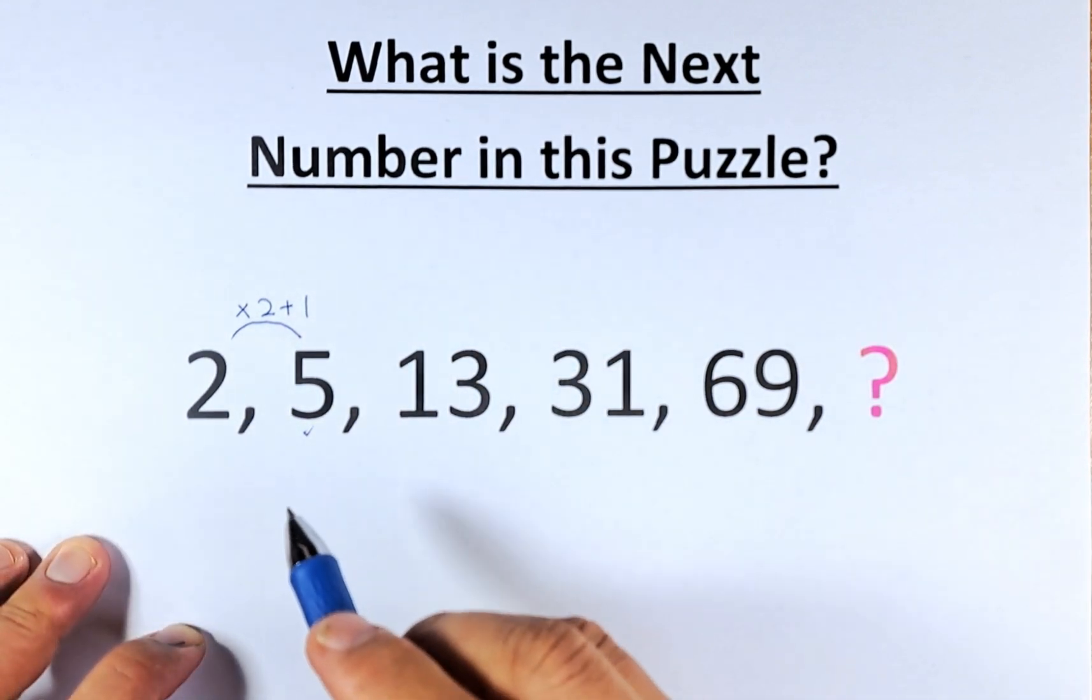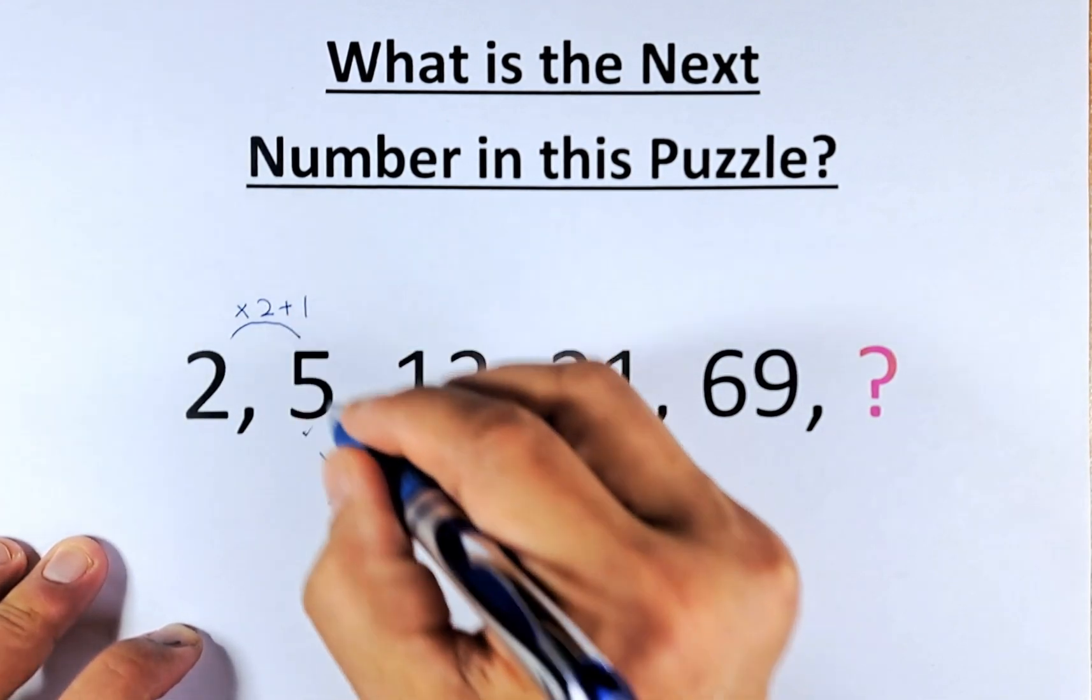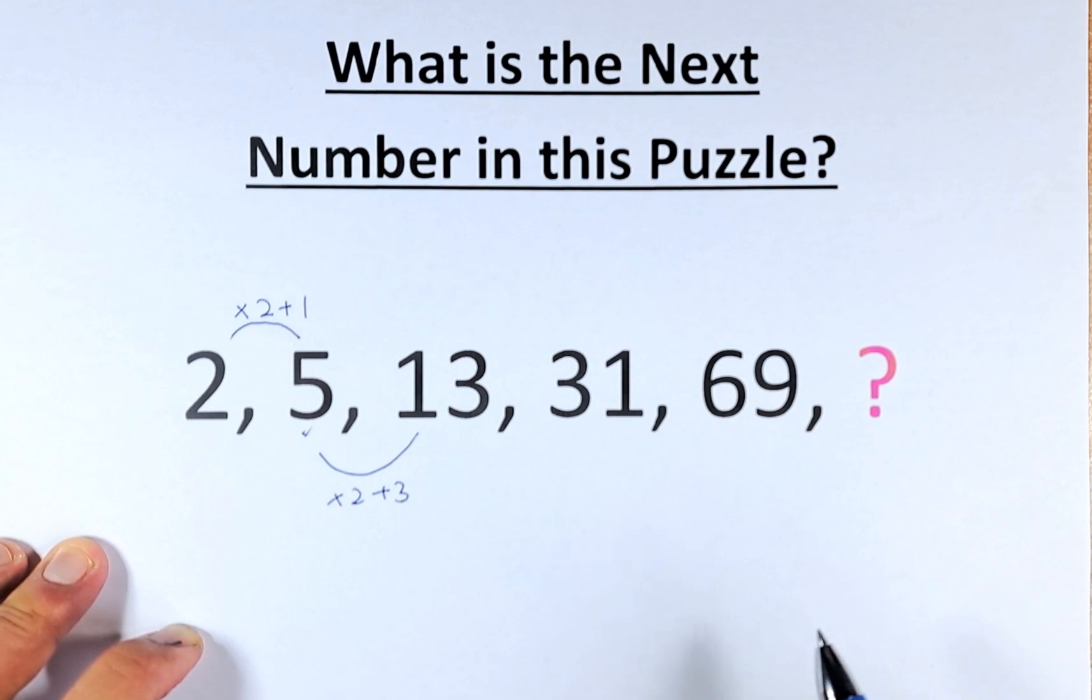Now we need to know what number from 5 to 13. So the same thing, we're going to multiply by 2 but this time, instead of 1, we're going to add 3. So 5 times 2 is 10, 10 plus 3 is 13.